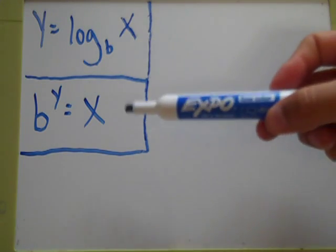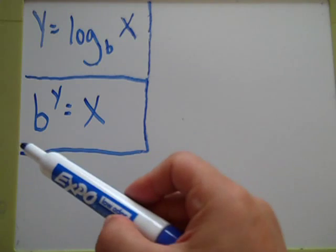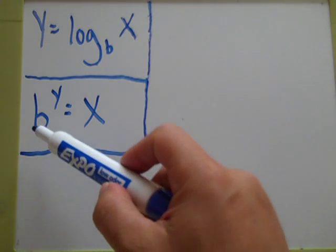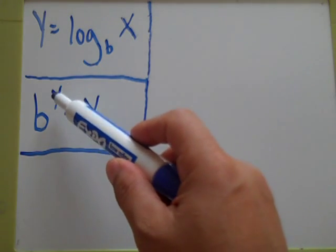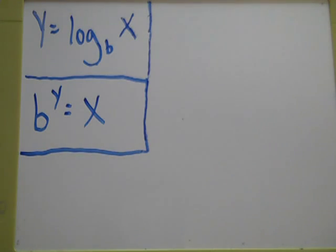This is your exponential form of that, these are equal to each other. Here, base with an exponent, y exponent, equals x.